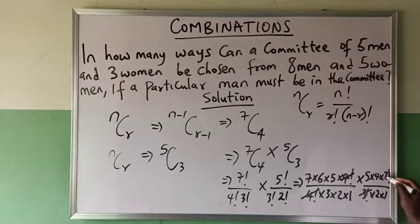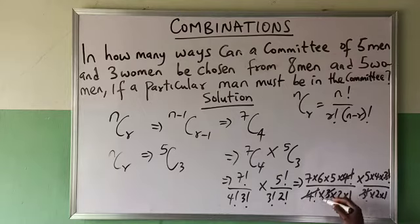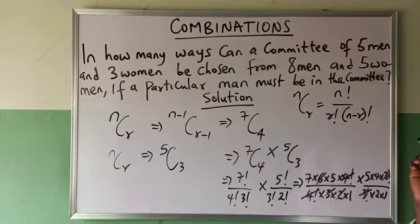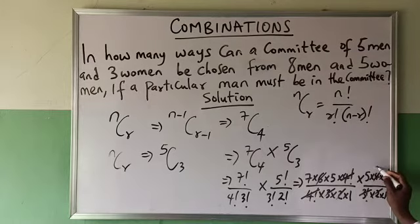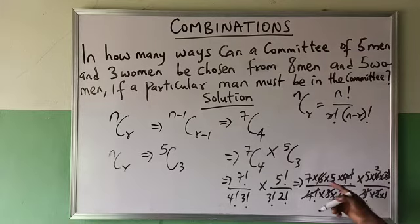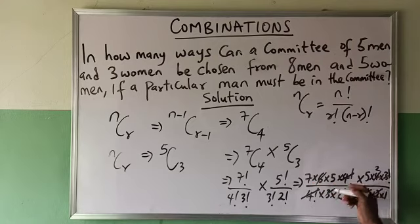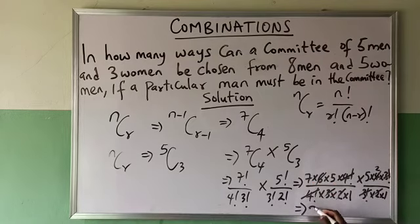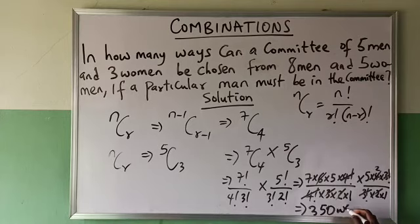The 4 factorials cancel. The 3 factorials cancel. After simplification, 7 times 5 equals 35, and 5 times 2 equals 10. So 35 times 10 gives 350 ways.